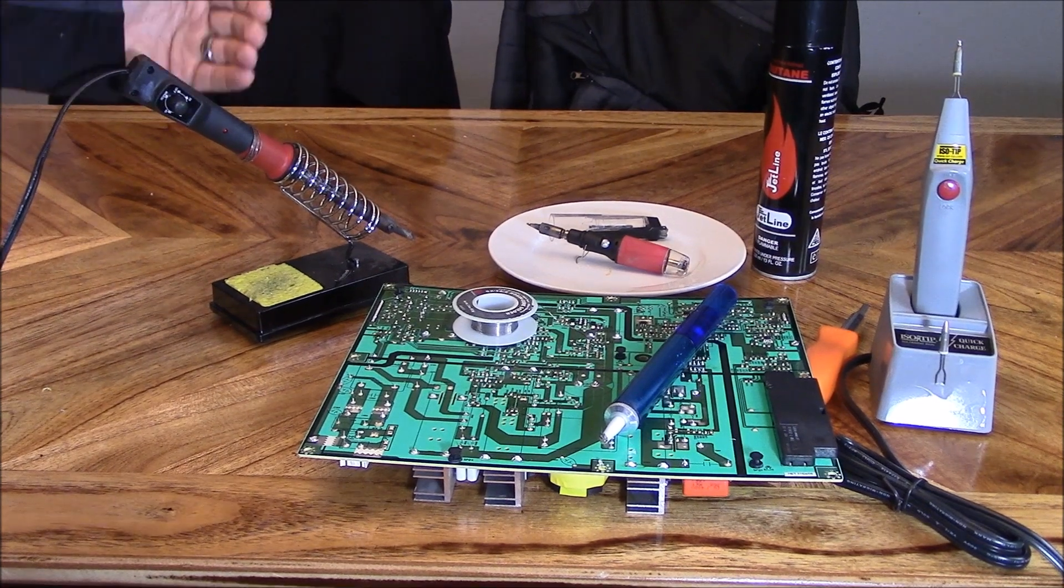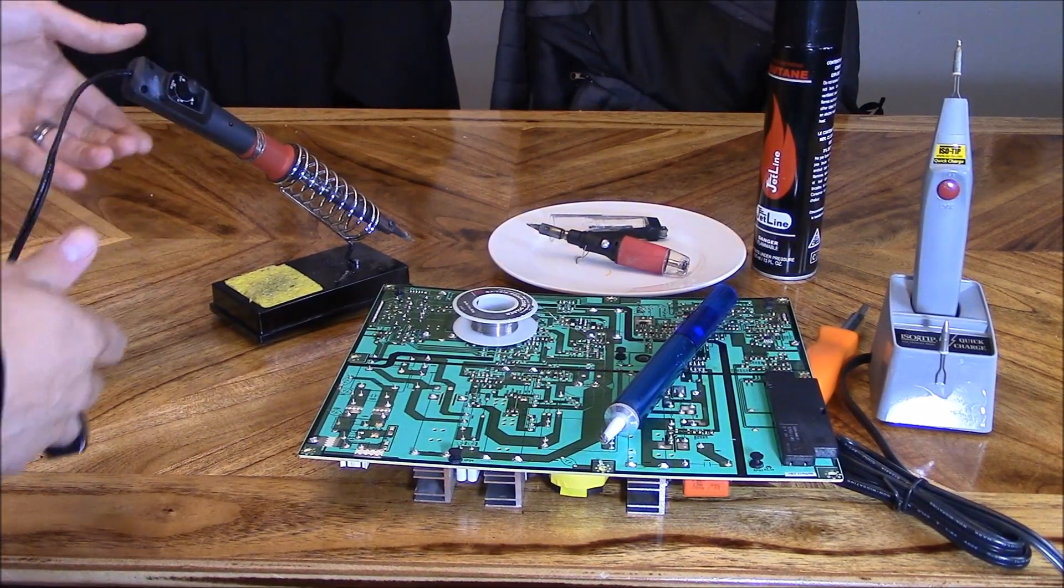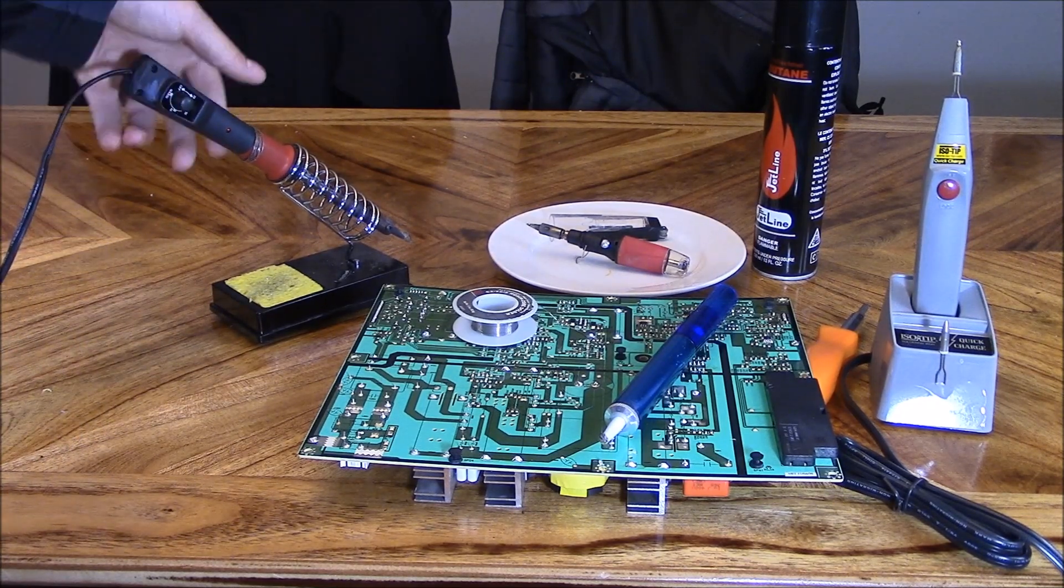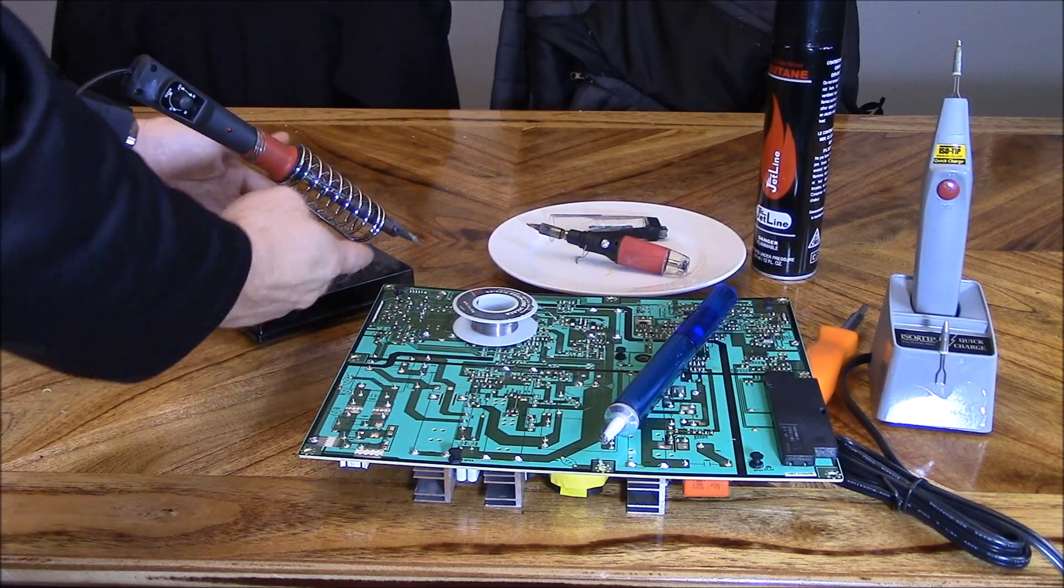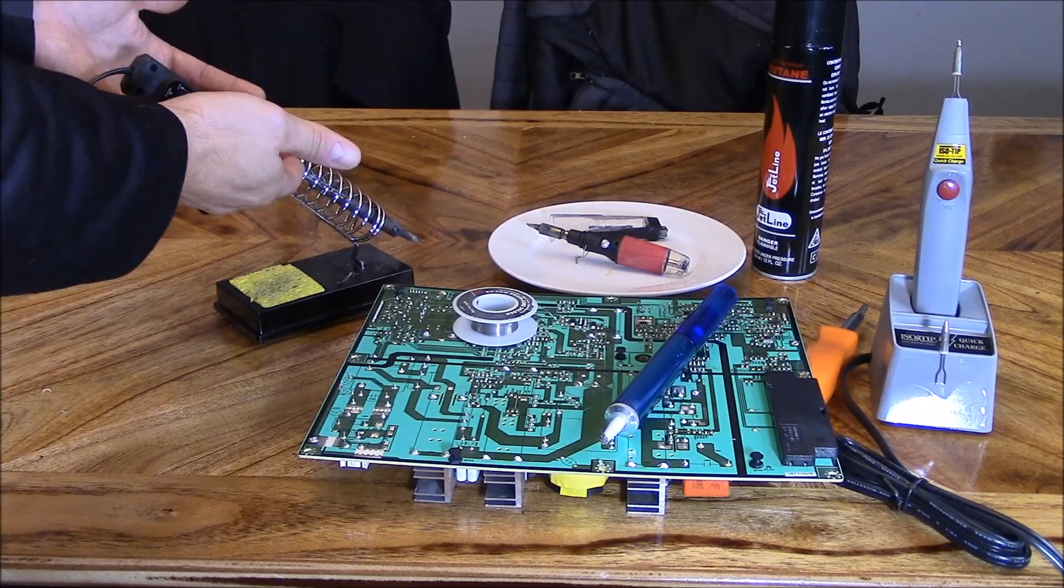Right here, I got a 50-watt Radio Shack adjustable soldering iron, and it's powered by a power cord that's connected to an AC outlet. This is an electrical soldering iron. It comes with a docking station, sponge, the dock, and of course, the soldering iron.